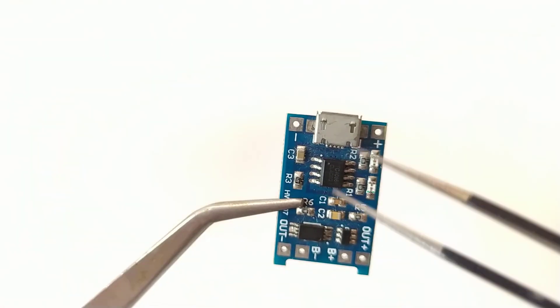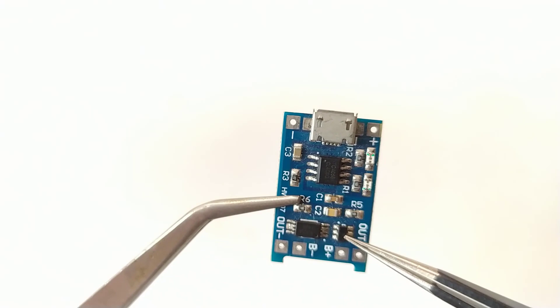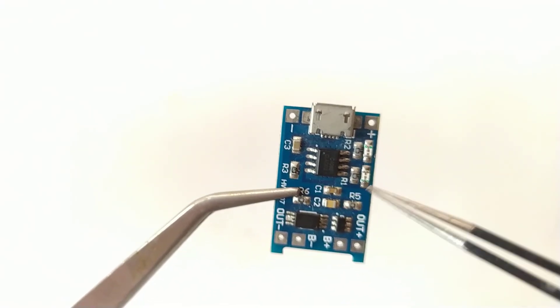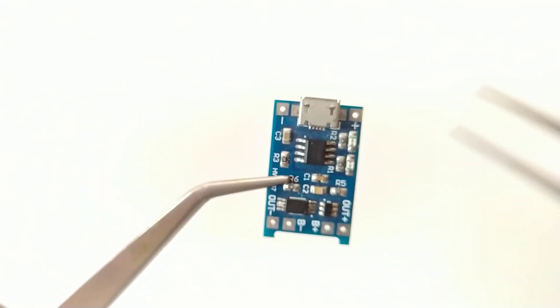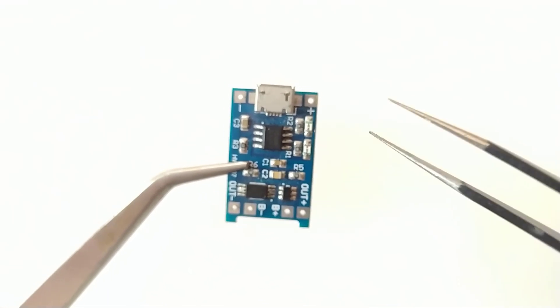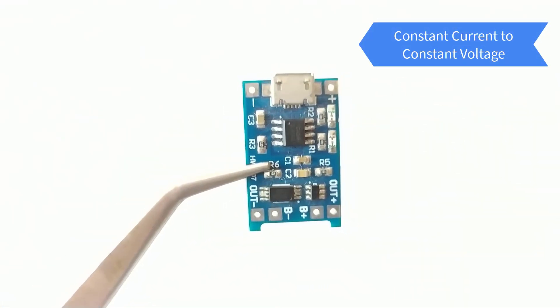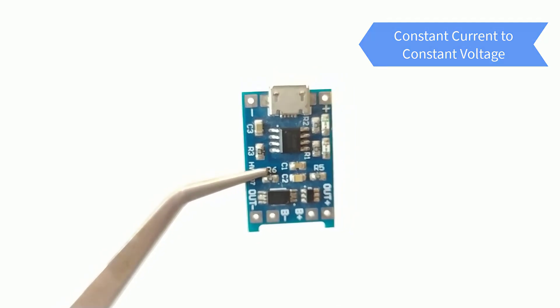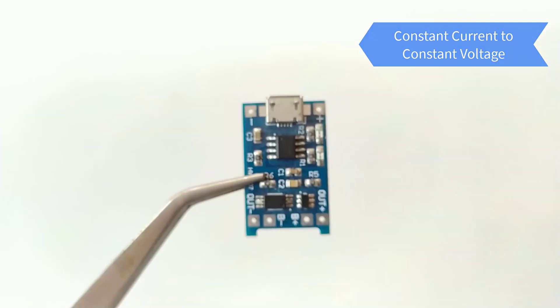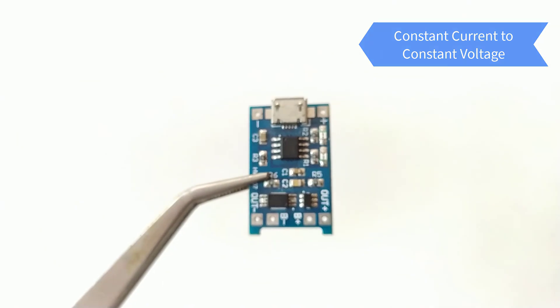This module uses both TP4056 and DW01A lithium ion battery protection IC which together in combination provide the following protection features: constant current to constant voltage. Manages the constant current to constant voltage charging of a connected lithium ion battery.